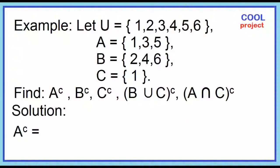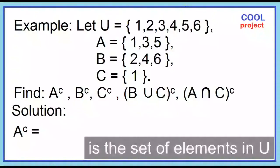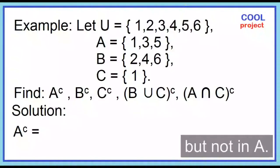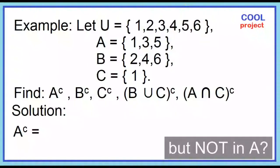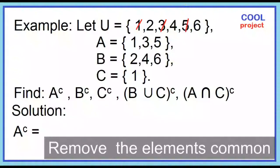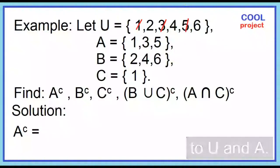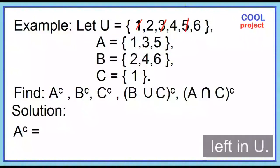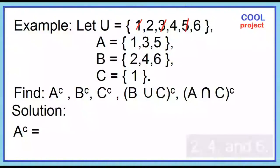What is the complement of A? The complement of A is the set of elements in U but not in A. Remove the elements common to U and A, then copy the elements left in U. The elements left in U are 2, 4, and 6. The complement of A contains 2, 4, and 6.